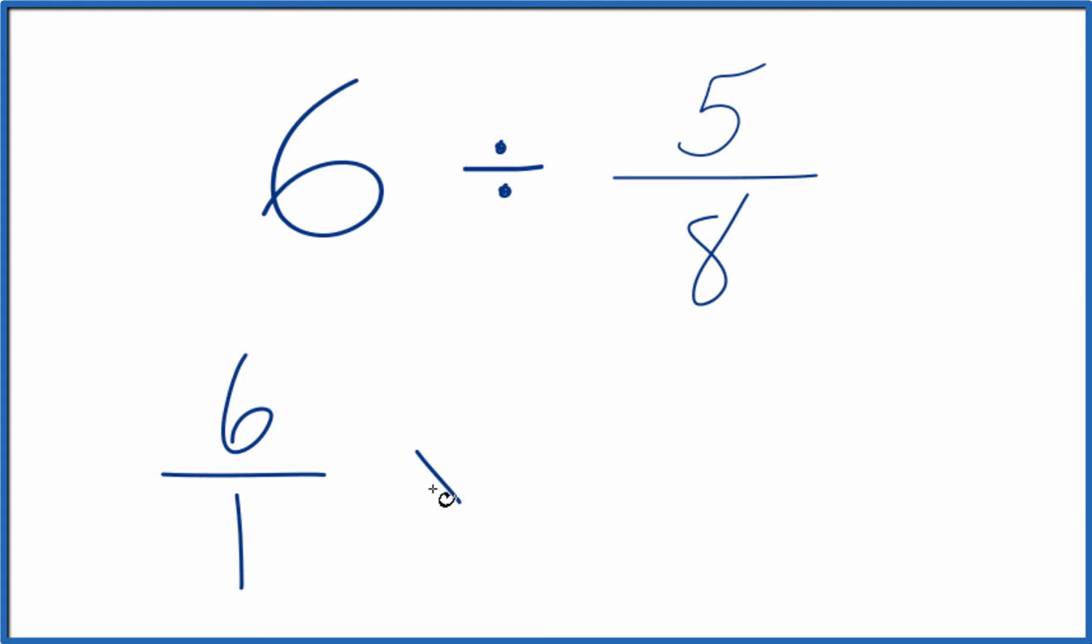Instead of division, let's multiply by the reciprocal of 5 over 8. So to take the reciprocal of a number, you move the numerator to the bottom, the denominator to the top. So we have 8 over 5, 8 fifths.